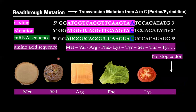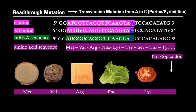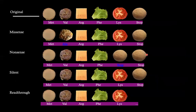In our read-through mutation, you can see that initially we had a stop codon that now codes for an amino acid, so this sequence just goes on and on and there's no stop codon to tell it to stop translating. Our cheeseburger could just keep adding toppings and adding toppings. This would be a transversion mutation because once again it's mutating from adenine to cytosine, which is a purine to pyrimidine.